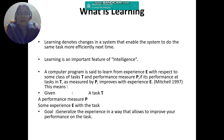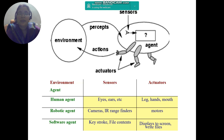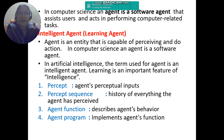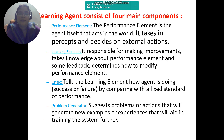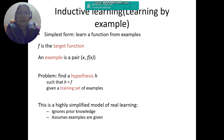So this is what learning is, and these are the various elements of the learning agent. This is what constitutes an intelligent agent — the performance element, learning element, critic, and problem generator — best illustrated by the taxi on roads example.